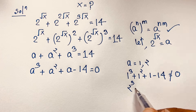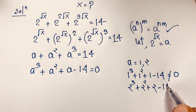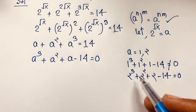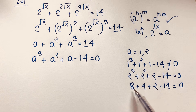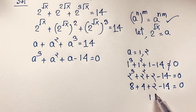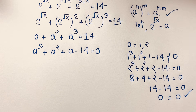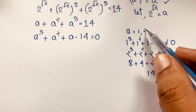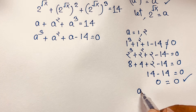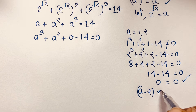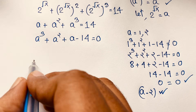...we get 2 cubed plus 2 squared plus 2 minus 14. That is 8 plus 4 plus 2 minus 14. So 8 plus 4 is 12, plus 2 is 14, minus 14 equals 0. Left hand side equals right hand side, so a equals 2 satisfies the equation. Therefore (a minus 2) is a factor of this cubic equation.